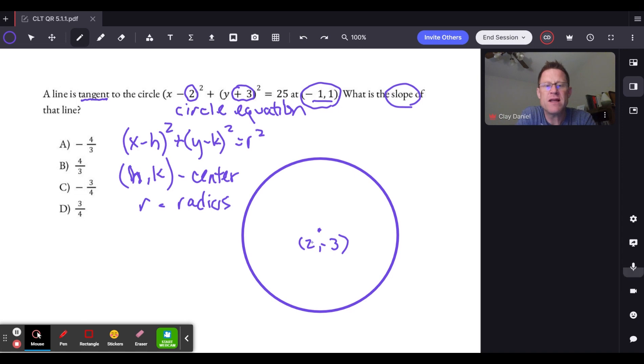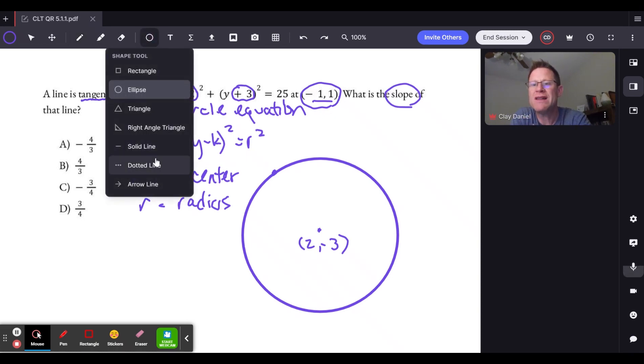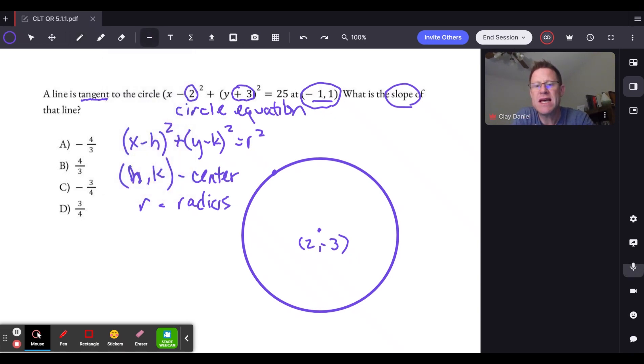So it follows that the point negative 1 should be 3 units to the left of 2, and the point positive 1 should be 4 units up from negative 3. So the point of tangency, let's just make a point about right there so that we can draw a line that will make sense to be tangent at precisely that spot.